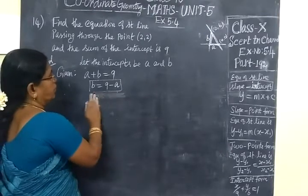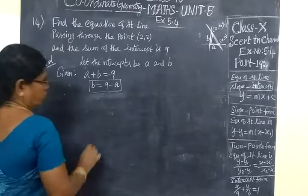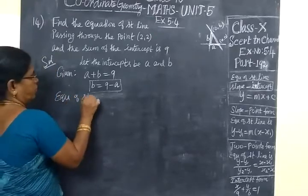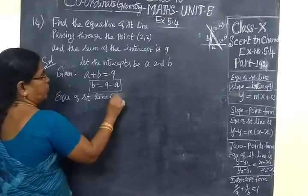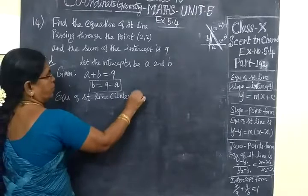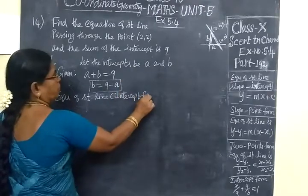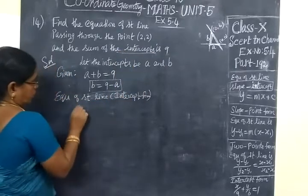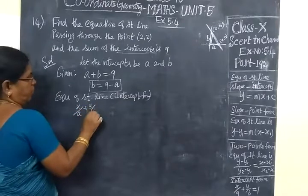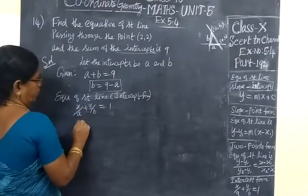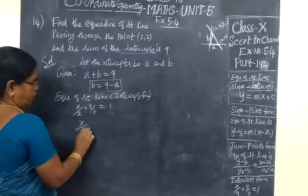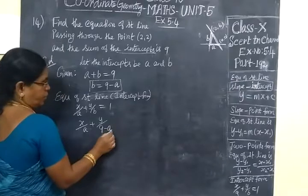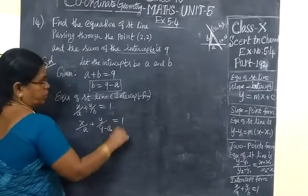So for intercept form, equation of straight line, what is intercept form? Intercept form is X by A plus Y by B equal to 1. So X by A, instead of B you are writing 9 minus A. So X by A plus Y by 9 minus A equal to 1.